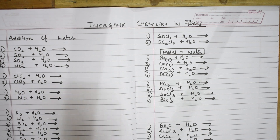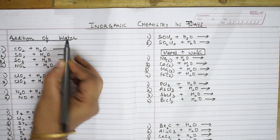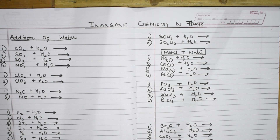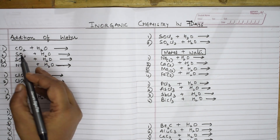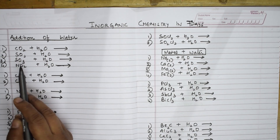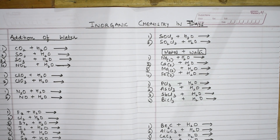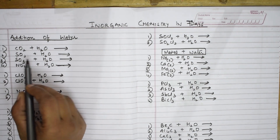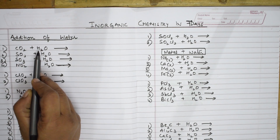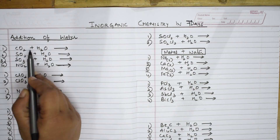Whenever there is addition of water, these are hydration reactions. I've picked up common categories: carbon dioxide, sulfur dioxide, sulfur trioxide, and NO2. When carbon dioxide combines with water, it is a simple addition giving H2CO3 — carbonic acid.